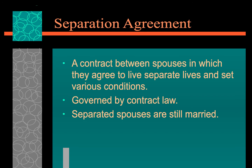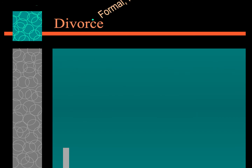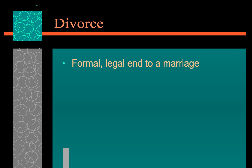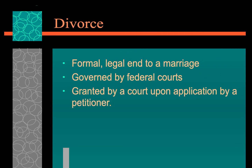While the one year is common, there is one way to get around the one-year requirement: if one side committed adultery and it has been proven with evidence, then the one-year separation is no longer required. A divorce is a formal legal end to the marriage, governed by the federal courts, and is granted by a court upon application. If the claim is contested, both sides will need to appear in court.